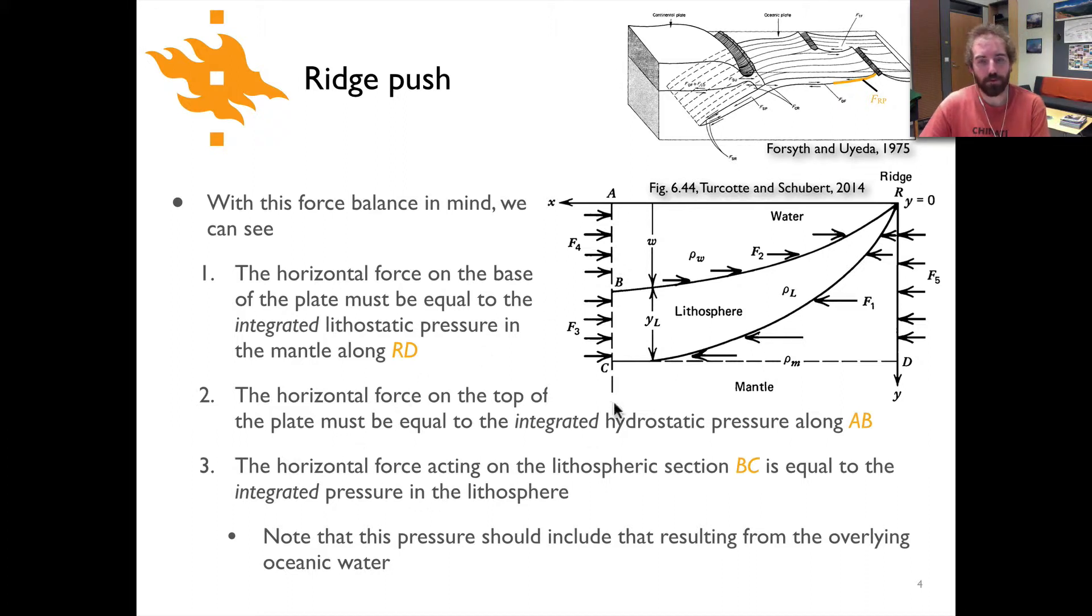The third force we have to consider then is what's left, and that the horizontal force is acting on this piece of the lithospheric section that goes from b to c. And the horizontal force in that case is equal to the integrated pressure in the lithosphere from point b to point c. And one thing to note here is that the pressure there should take into account the fact that there's water sitting on top of the lithosphere.